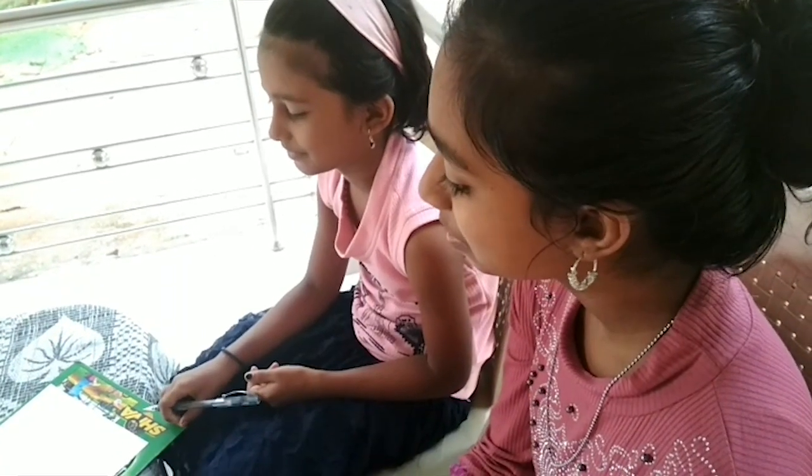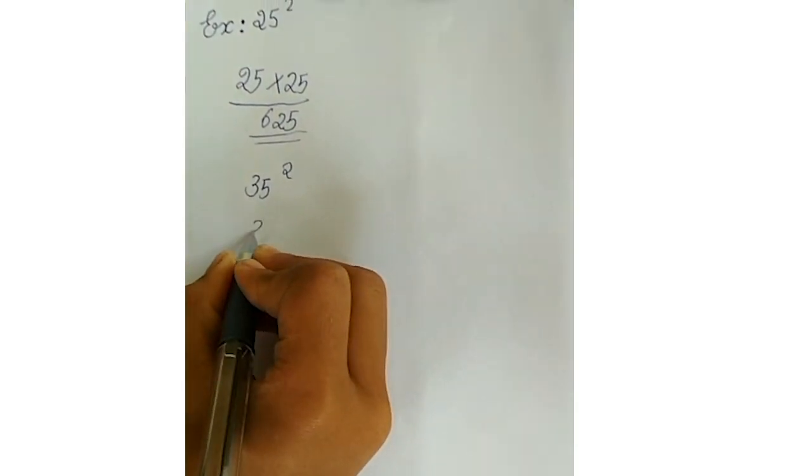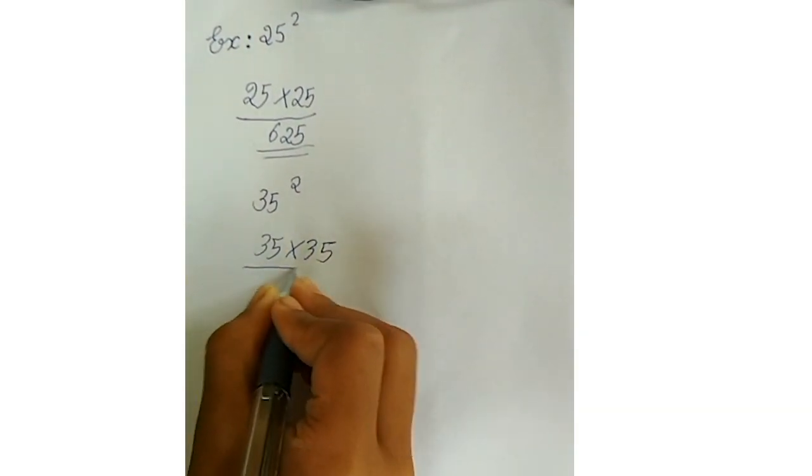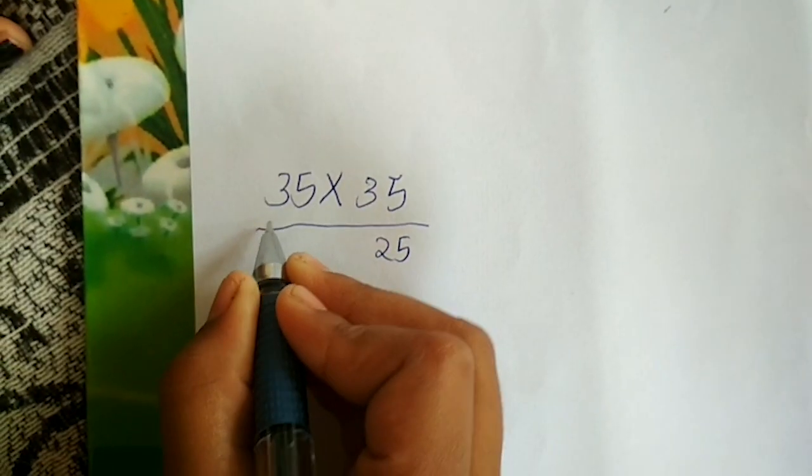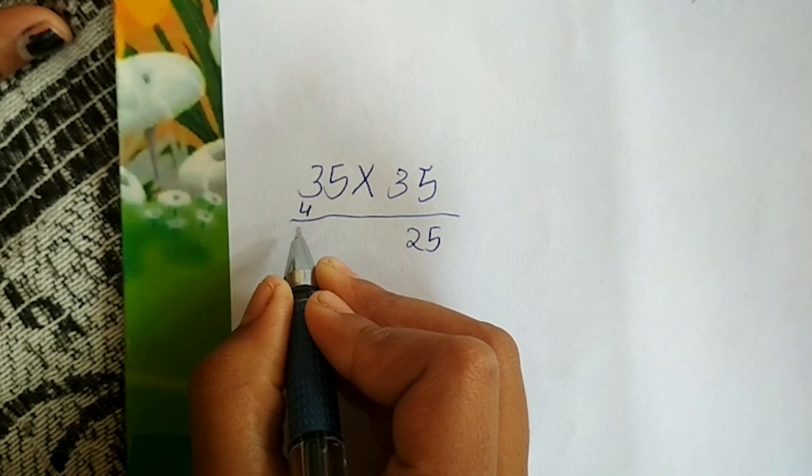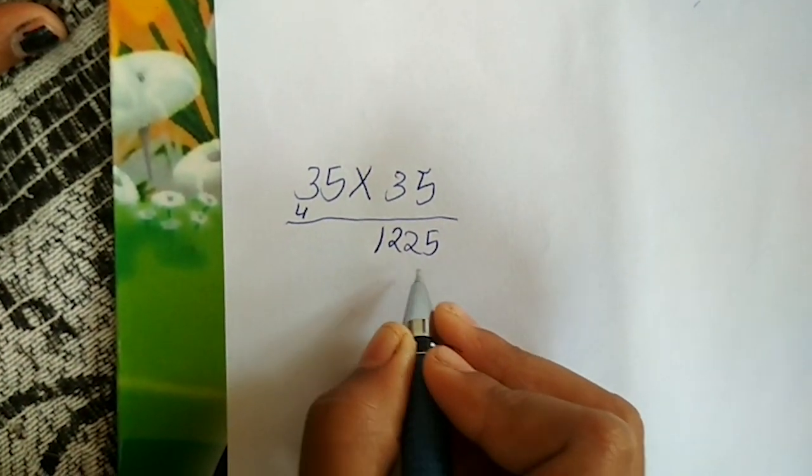Let's do some examples together. 35 square means 35 into 35. First, we should write 25. The next number of 3 is 4. So, multiply 3 into 4, that is 12. Now, the answer is 1225.